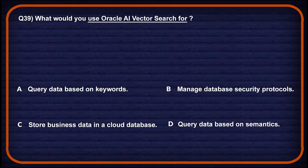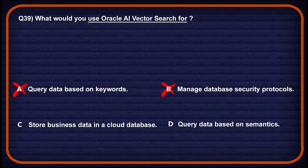Let's move on to question number 39: what would you use Oracle AI Vector Search for? Option A: query database by keywords — traditional search uses keywords but vector search goes beyond literal matches, so wrong. Option B: manage database security protocols — security management is unrelated to vector search, so wrong. Option C: store business data in cloud database — data storage is a general database feature, not specific to vector search, so wrong. Option D: query data based on semantics — Oracle AI Vector Search enables semantic queries for retrieving results based on meaning, so this is the correct one.